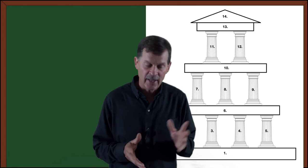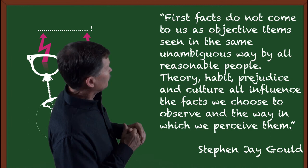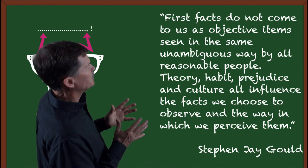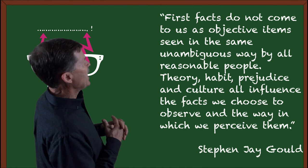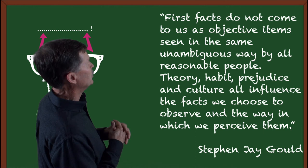And that is what we're looking at is what are the factors that influence us in these different belief systems. And that is where we've gone with the quote from Stephen Jay Gould, who says, First, facts do not come to us as objective items seen in the same unambiguous way by all reasonable people. Theory, habit, prejudice, and culture all influence the facts we choose to observe and the way in which we perceive them.